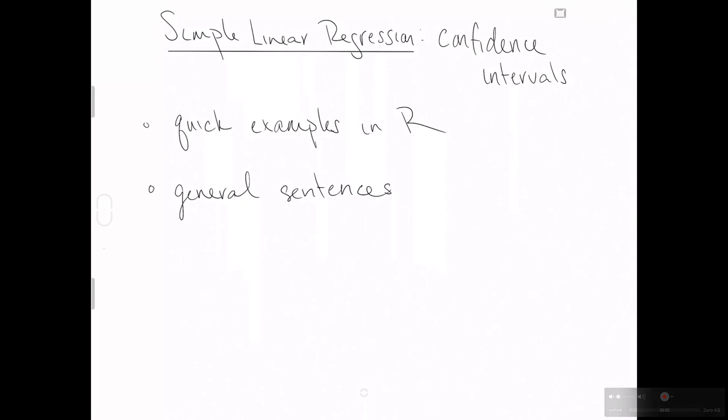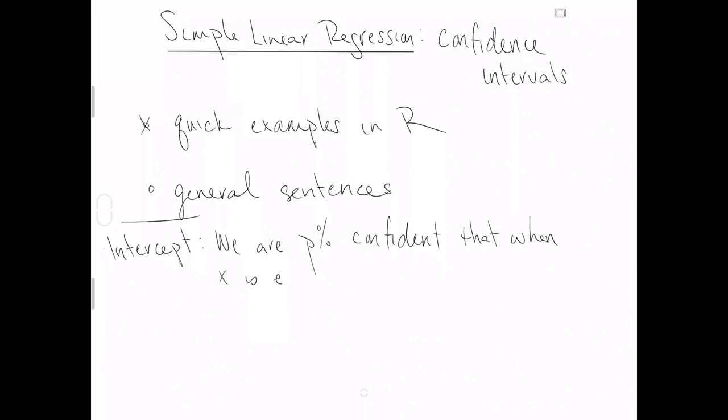We just gave some quick examples in R. Now we're going to try some general sentences. We'll start with the intercept. We are p percent confident for whichever percent confident you choose that when x is equal to zero units, that is when the explanatory variable is equal to zero units.